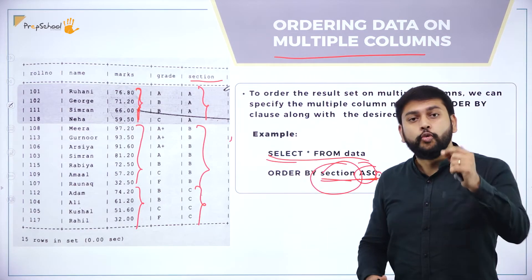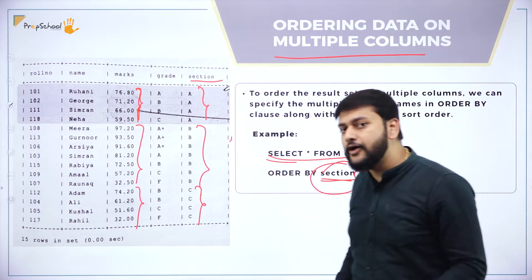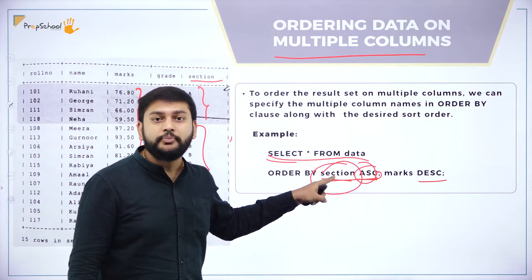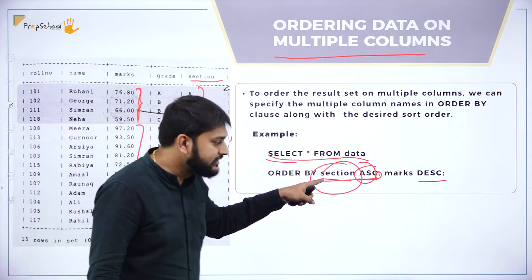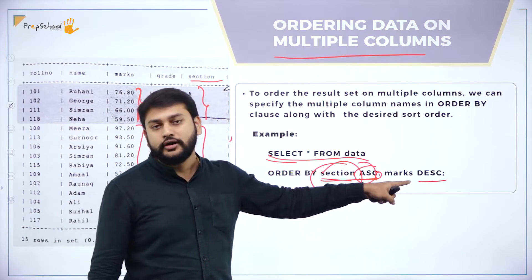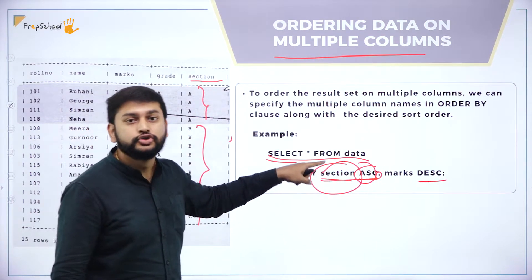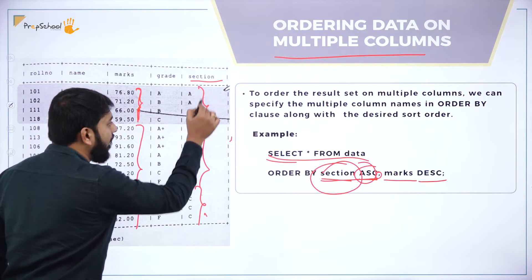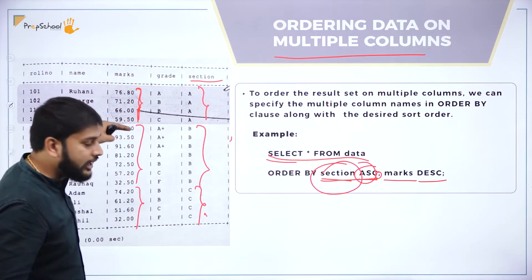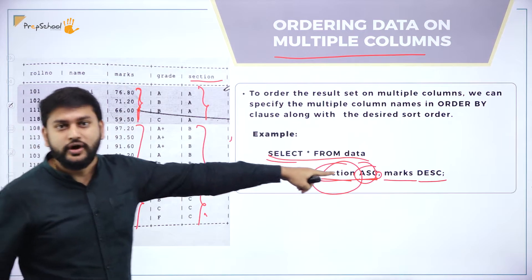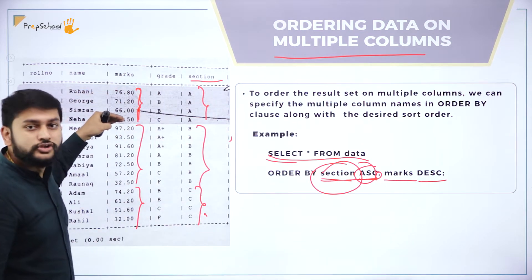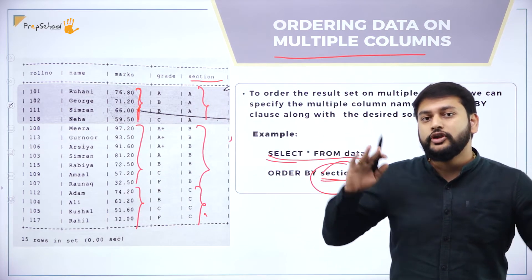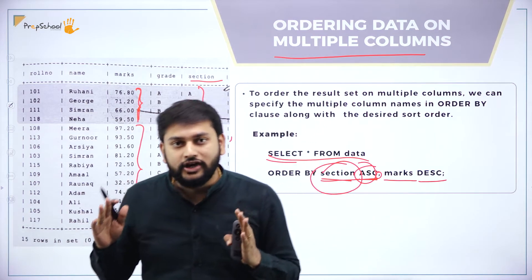When sorting more than one column, the sorting happens from left to right. The first column sorted is section, then marks are sorted within each section group. For each section value, the marks are sorted in the order you specified — in this case, descending. That is how multiple column ORDER BY works.